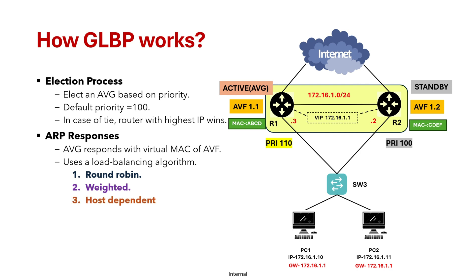We also have the host-dependent algorithm. If you want PC2, for example, to always send traffic via R1 and not via R2, you can use this algorithm. In host-dependent mode, each host is assigned to a specific AVF based on its MAC address, ensuring a consistent gateway MAC assignment for each device.